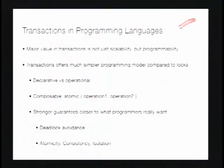Transactions are also composable in a way that locks aren't. If I have operations one and two and I want them to happen as a transaction, I can just wrap atomic around them — I don't have to figure out what lock to acquire. That can be very nice with fine-grained locking. In contrast, if I'm using fine-grained locking in both operations and want to compose them into a larger atomic operation, it's very hard to do with locks in an efficient, clean way.